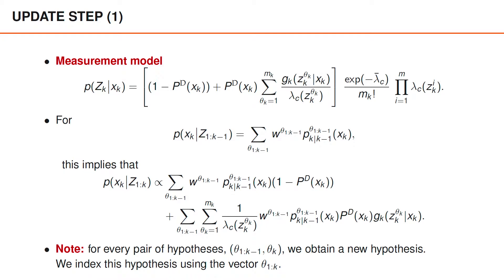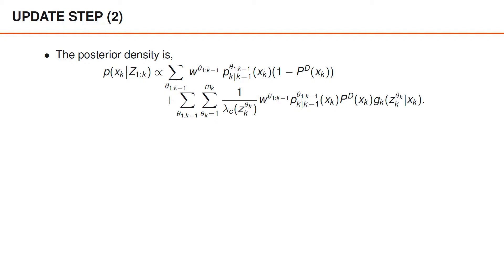We now have a large sum with many different terms. However, every term is a product of one term in the likelihood, which corresponds to a specific theta_k, and one term in the predicted density, which corresponds to a sequence of associations up to time k-1. That is, every term corresponds to a pair of hypotheses, theta_{1:k-1} and theta_k. For every pair, we obtain a new hypothesis defining the sequence of associations up to time k, here denoted theta_{1:k}. It should therefore be possible to view this entire sum as a summation over theta_{1:k}, so the posterior density is proportional to this summation.